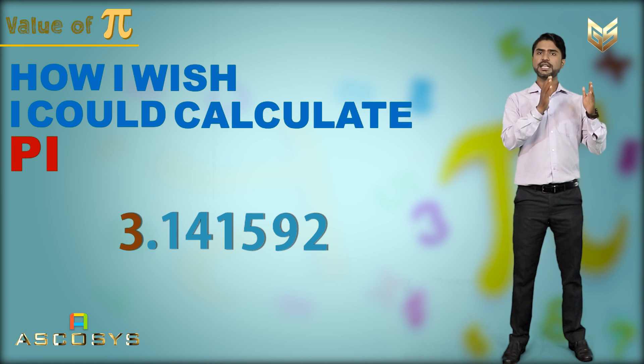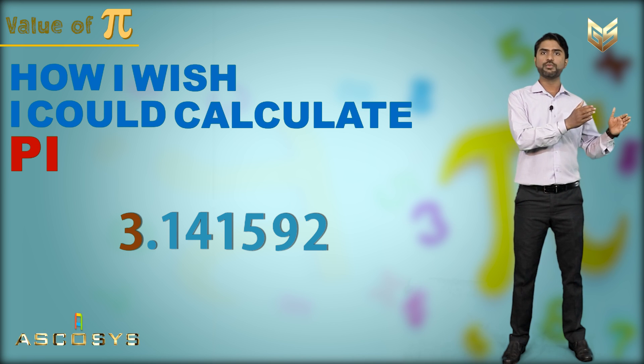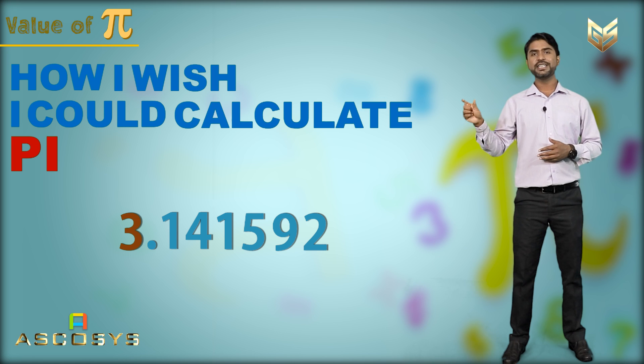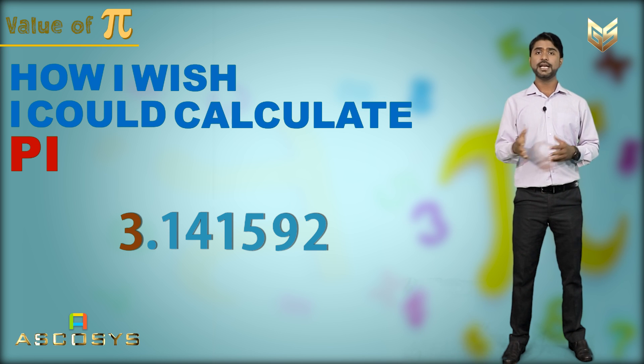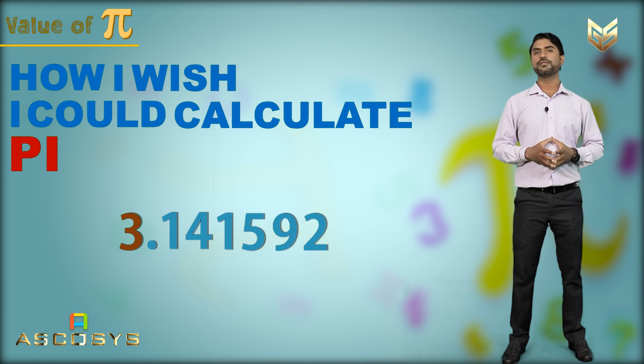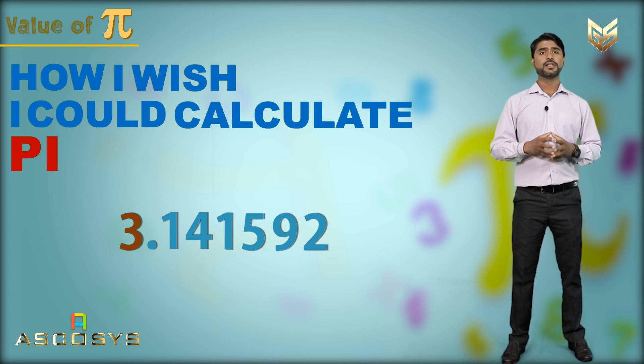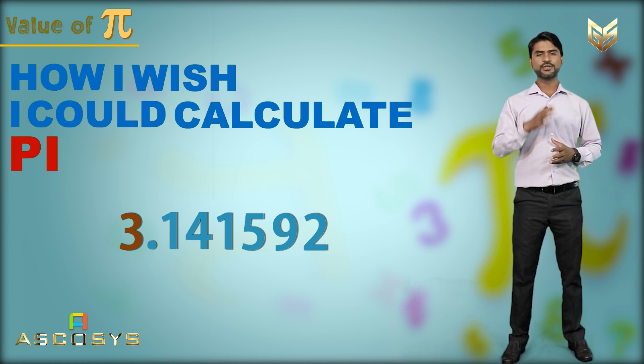So in this way, the number of letters present in each word will give you the digit in the value of pi. And thus, we can get the first seven digits of the value of pi. Thus, the value is three point one four one five nine two.